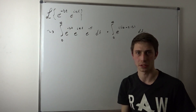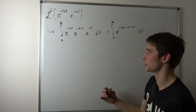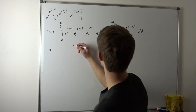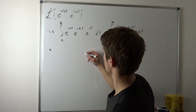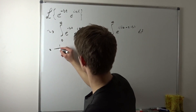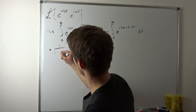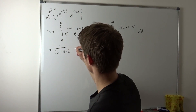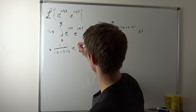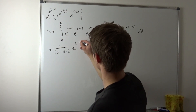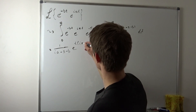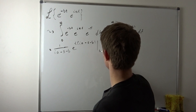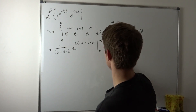And we know how to integrate that — that's quite easy. When we integrate that, we end up with 1 over (ia minus s minus b) times e to the t(ia minus s minus b), evaluated from zero to infinity.